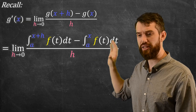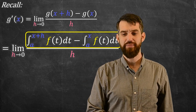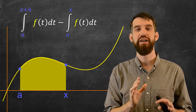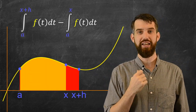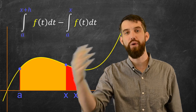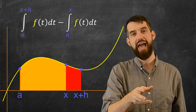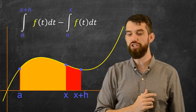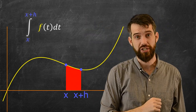Let's go back geometrically and look at the numerator — the difference of these two accumulation functions. The integral from a to x+h minus the integral from a to x: geometrically, the red region goes up to x+h and the yellow up to x. Their difference — the big area minus the small one — is just this little red strip, which is the integral from x to x+h of f(t) dt.